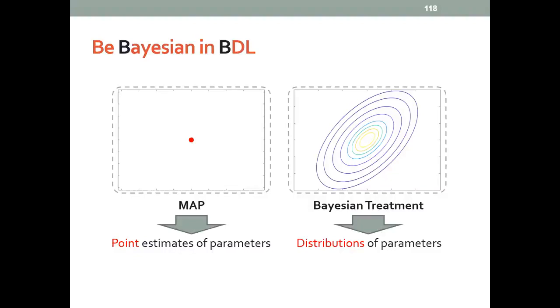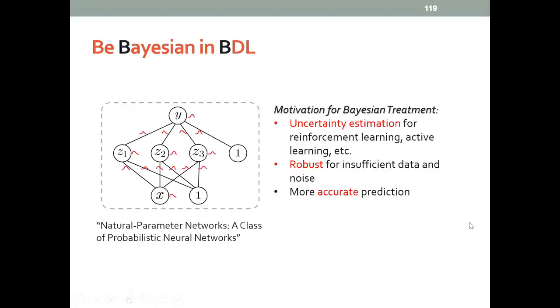Of course, Bayesian treatment will be computationally more extensive, and this is particularly true for neural networks. But if we have Bayesian treatment, it will provide us extra benefits. For example, it can provide uncertainty estimation, which is very important for problems like reinforcement learning and active learning. The model will also be more robust in the case of insufficient data and noise, and we can have more accurate predictions as well.